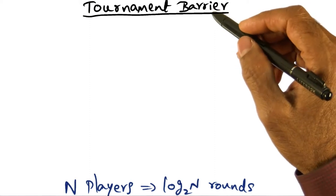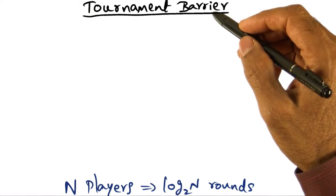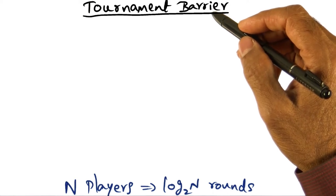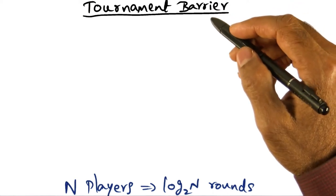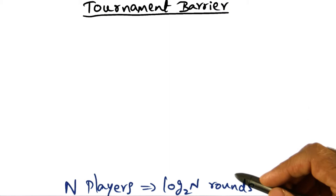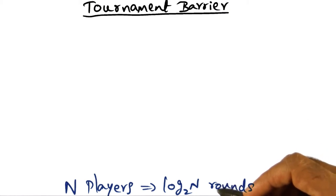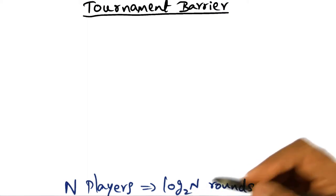The next barrier algorithm we're going to look at is what is called a tournament barrier. The barrier is organized in the form of a tournament with n players, and since it's a tournament with n players and two players playing against each other in every match, there are going to be log n rounds, log n to the base two.